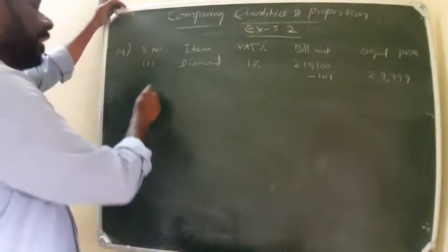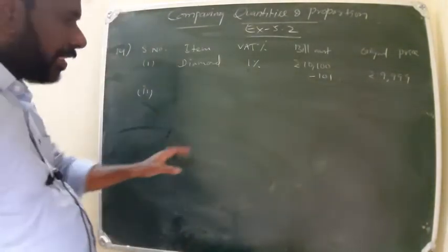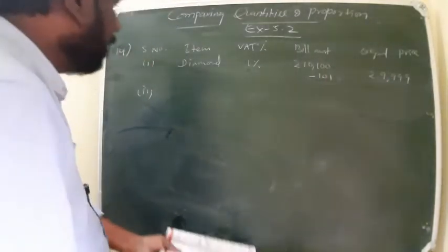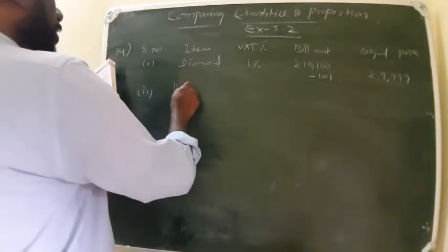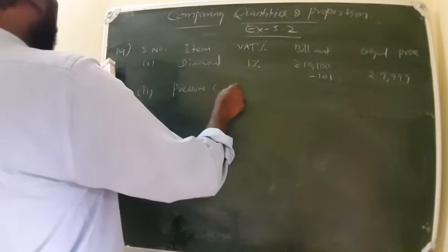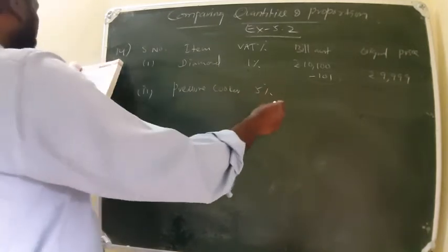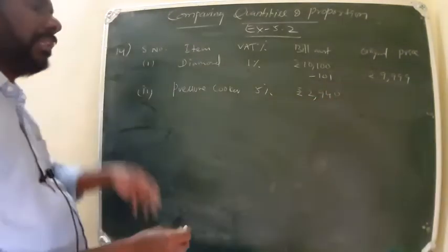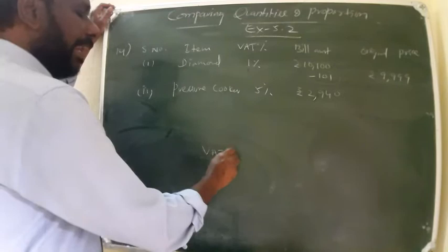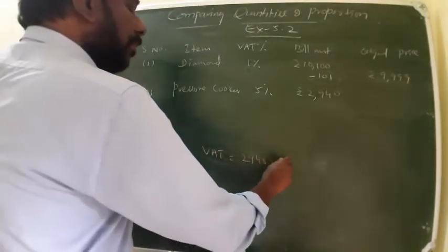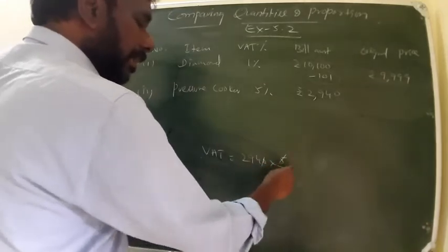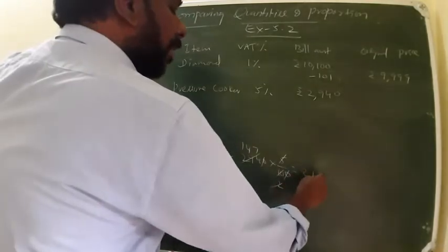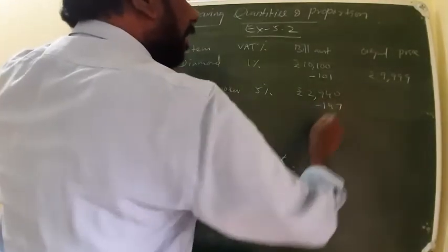In the same way, next, the second one we can do. This process you have to do in rough notes or right side of the page. Next, given that pressure cooker VAT 5%, bill payment is Rs. 2940. So first find out VAT, actual VAT. VAT is 2940 into 5 by 100. Cancel zeros, 5 by 2, 2 here, 1 times 4 times 7, that's 147.